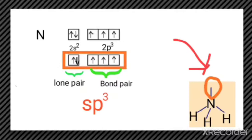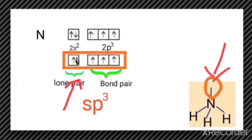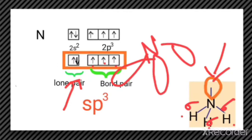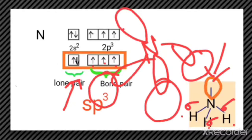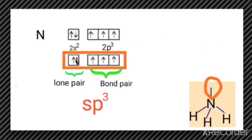From the four sp3 hybrid orbitals, one orbital has a lone pair as shown in the diagram. The remaining three hybrid orbitals share their electrons with three hydrogen atoms by overlapping with the hydrogen 1s orbital. There is formation of sigma bonds due to the head-to-head overlapping of the sp3 hybrid orbitals of nitrogen with the 1s orbital. So this is the structure for ammonia — three sigma bonds are formed, and the hybridization of nitrogen in ammonia is sp3.